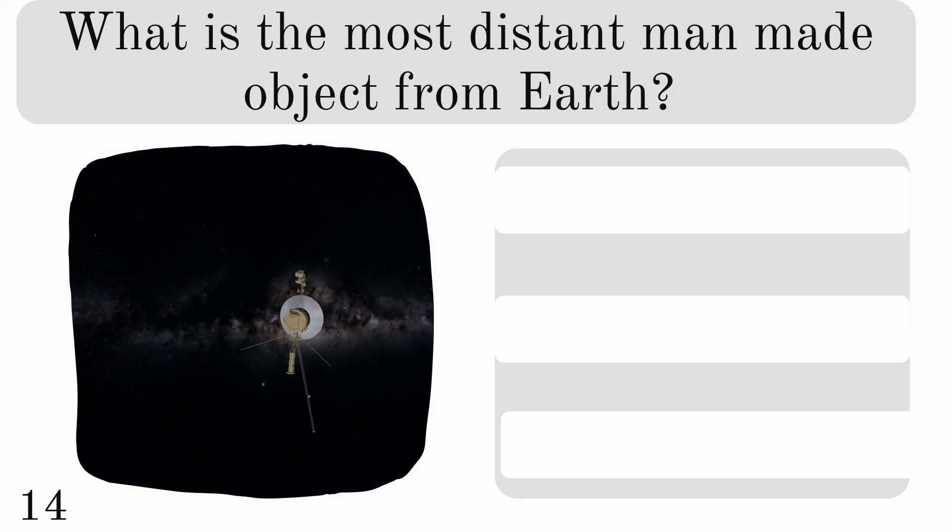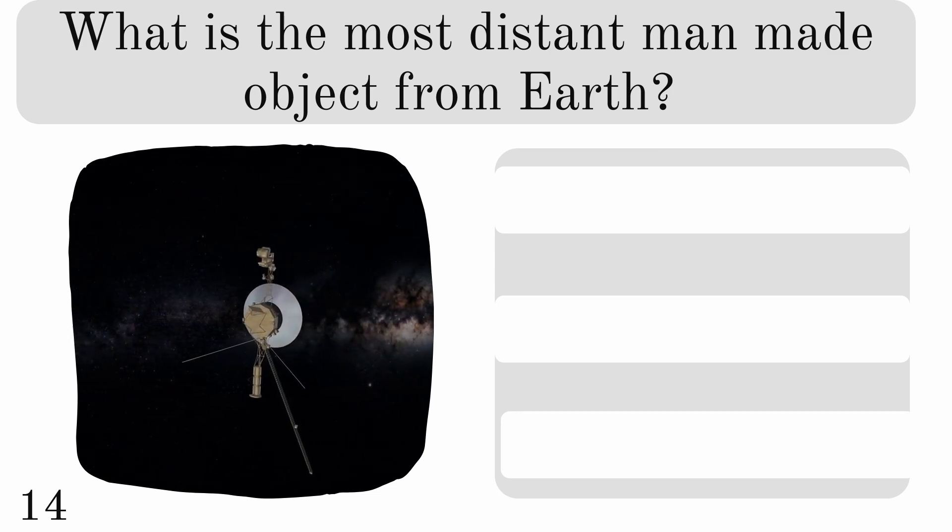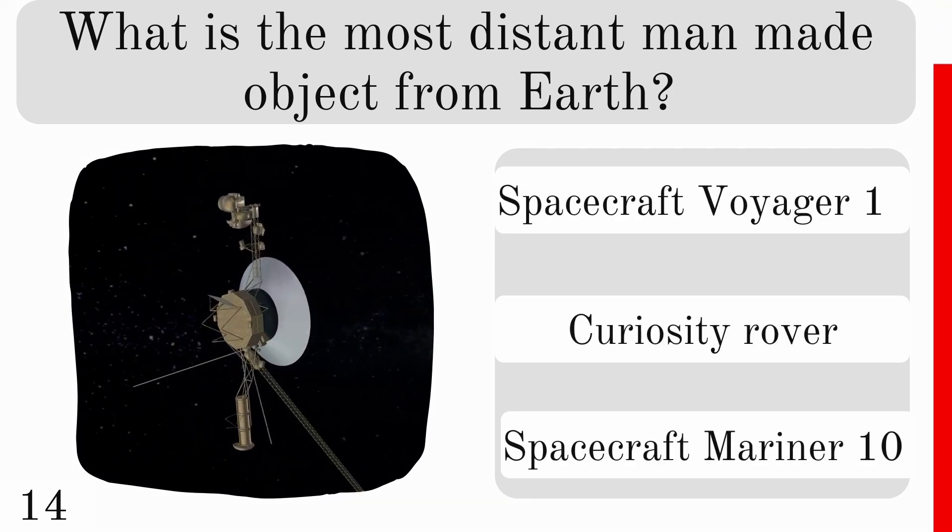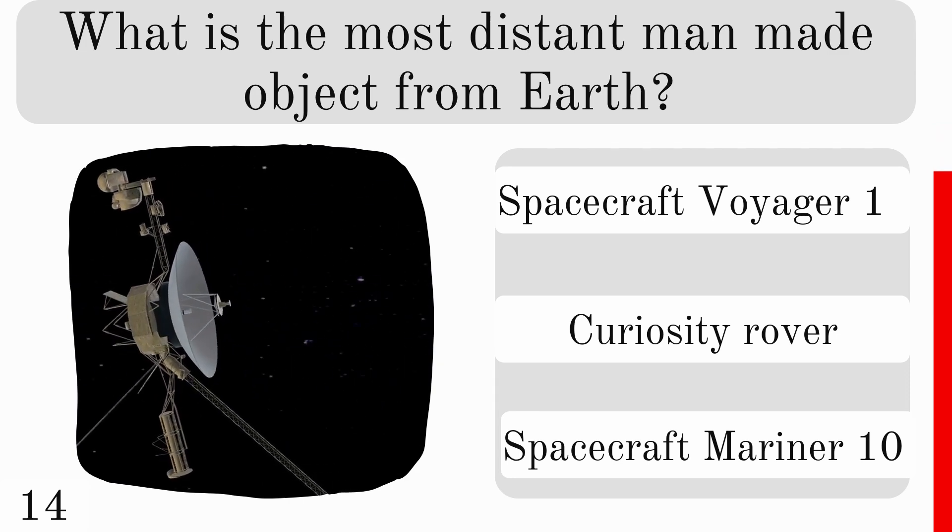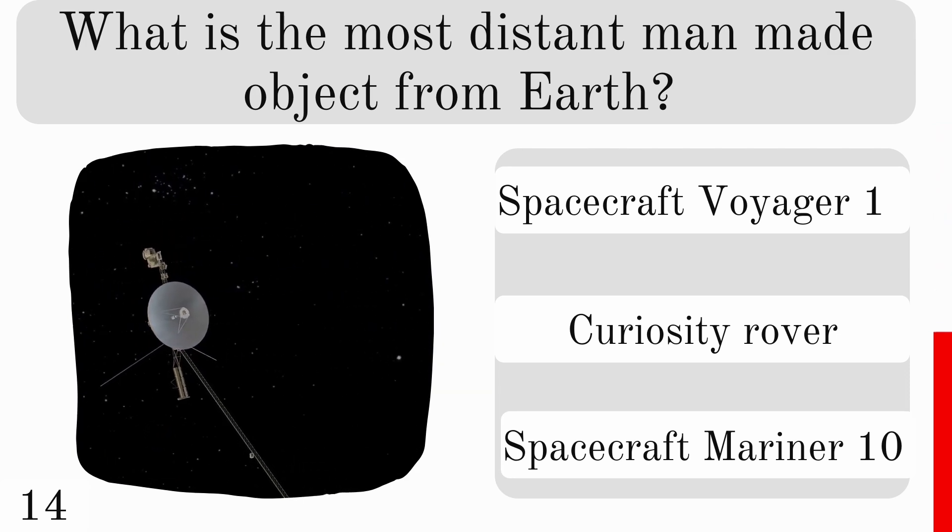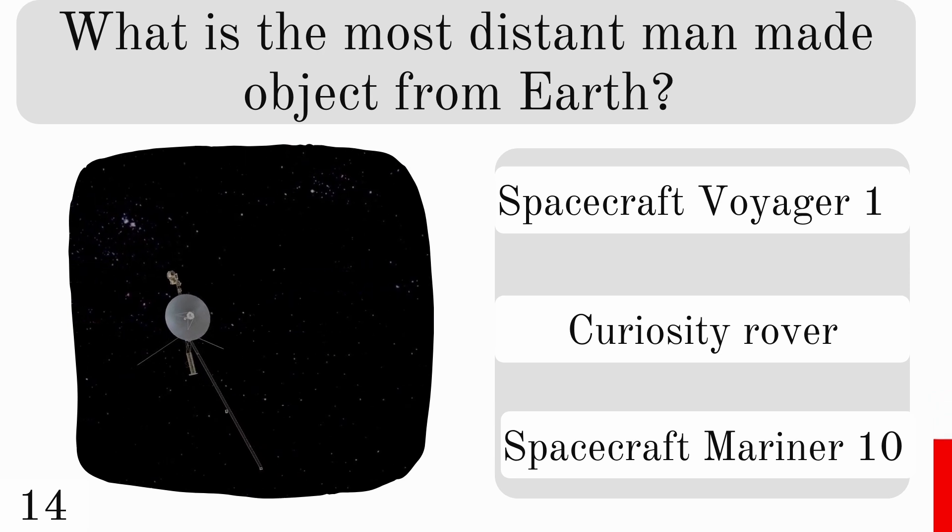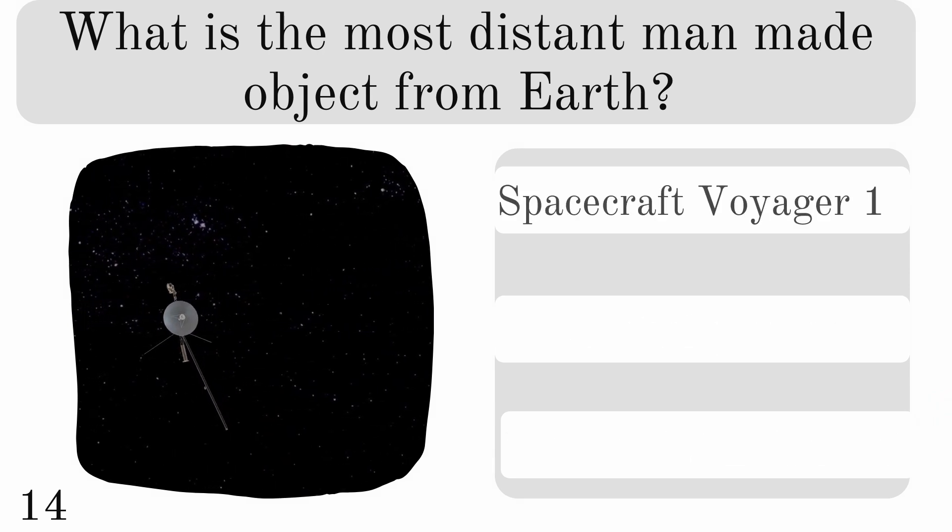What is the most distant man-made object from Earth? Voyager 1, Curiosity Rover, or Mariner 10? And the answer is Voyager 1.